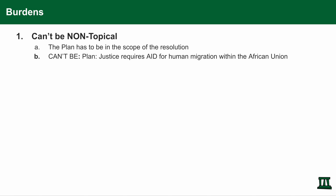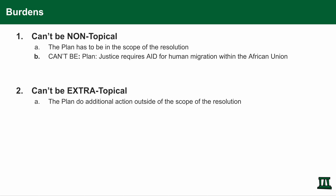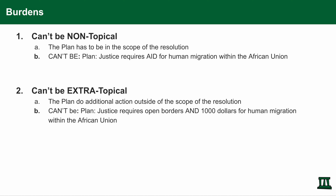For example, it can't be 'plan justice requires aid for human migration within the African Union' if the resolution says 'resolved justice requires open borders' — your plan has to fall within open borders and can't require aid for human migration. Second, your plan can't be extra-topical, also denoted as extra-T. The plan cannot do additional action outside the scope of the resolution. For example, your plan cannot be 'justice requires open borders and $1,000 for human migration,' because $1,000 does not fall in the resolution. Your plan has to be topical and can't do things the resolution doesn't specify.